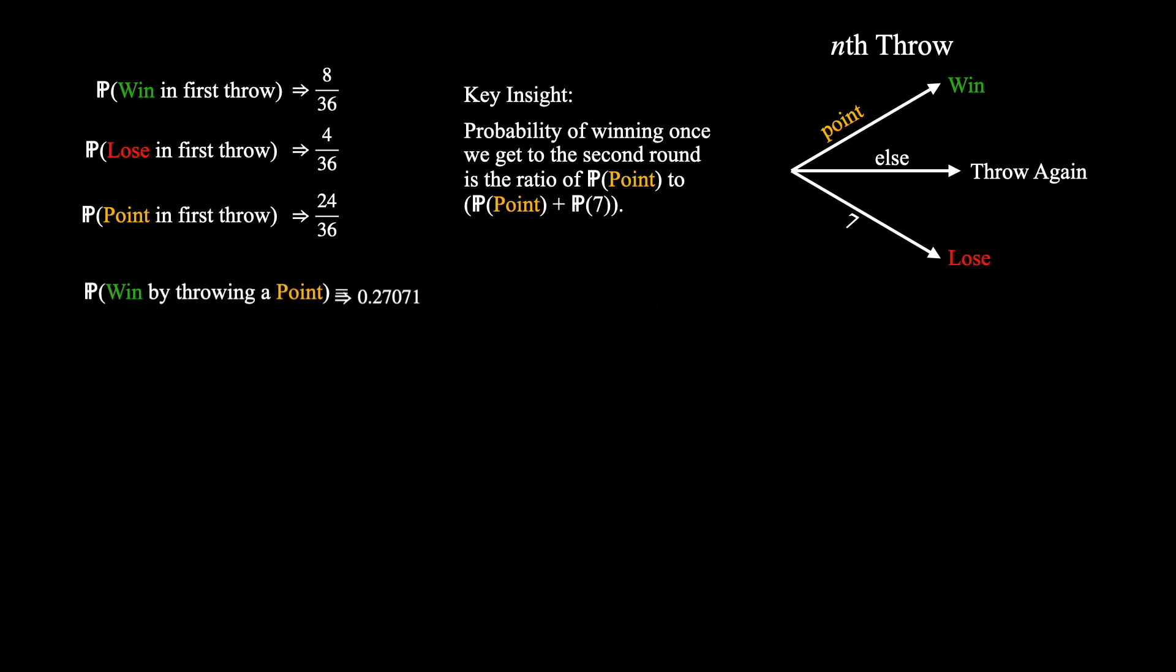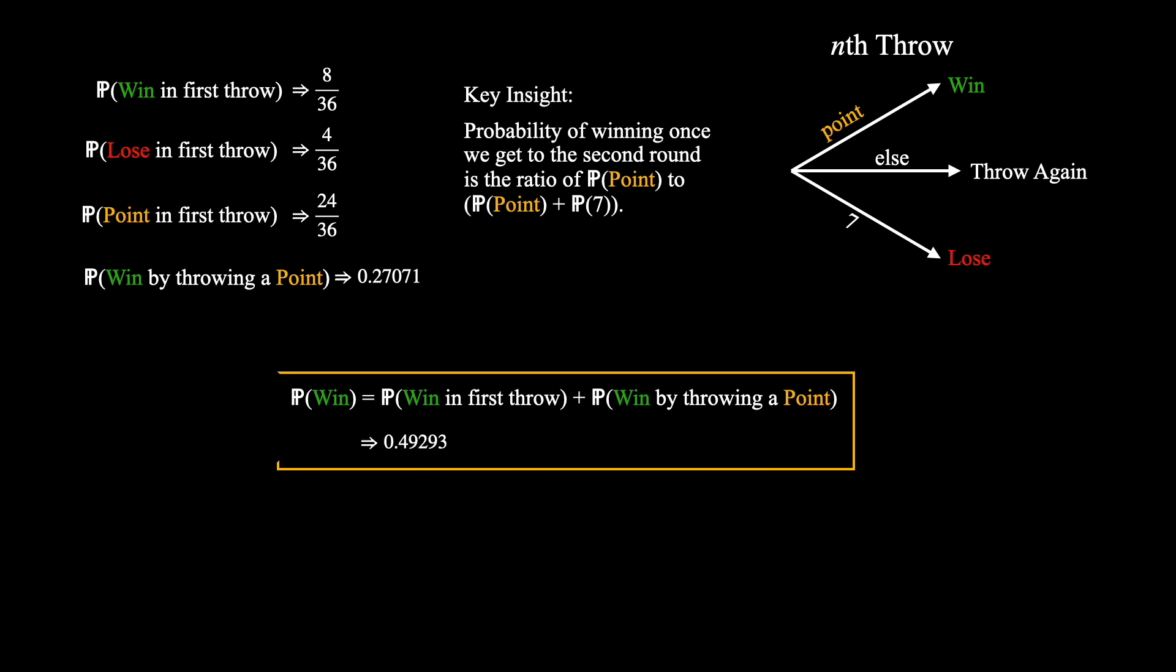Alright, so we've got a lot of this problem worked out now. Our final step is to finally compute our probability of winning by combining the probabilities that we won in our first throw, plus the probability that we win in any subsequent throw by throwing a point. We've already computed both of these values, and we know that they are mutually exclusive events, so we can simply add them up to get 0.49293. And thus we've done it. We've found the odds of winning at the game of craps.